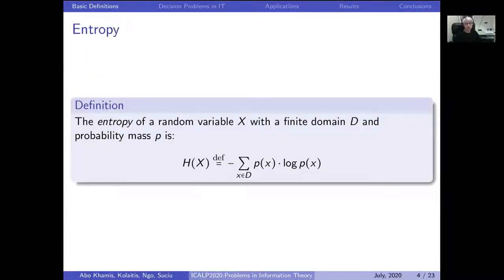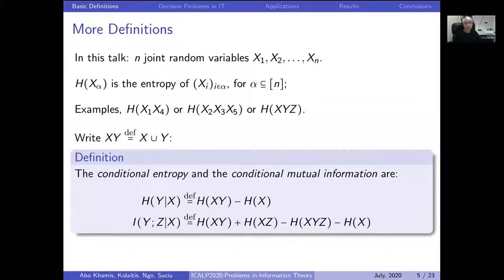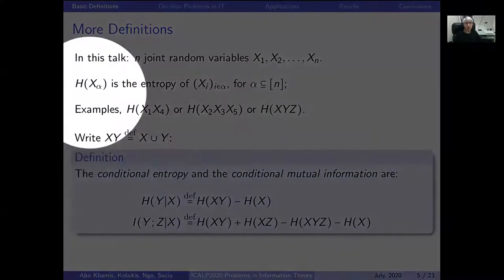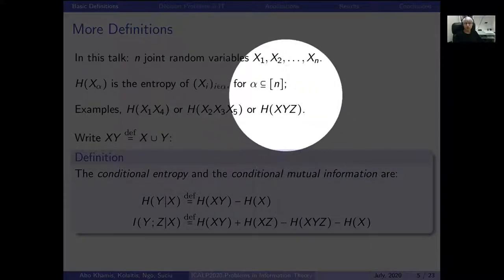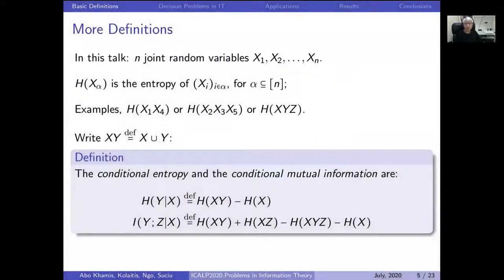We will be concerned with finite probability spaces and a random variable over such a probability space. The entropy of this random variable is defined in the standard way: it is a sum over all outcomes of that random variable of the probability of that outcome times log of the probability of that outcome, with a minus sign. We are interested not in a single random variable but in n joint random variables x1 up to xn. For any subset of these random variables, we consider the entropy of that subset, and we denote them as h(x1, x4), h(x, y, z), meaning the entropy of the joint distribution of the variables x, y, and z.